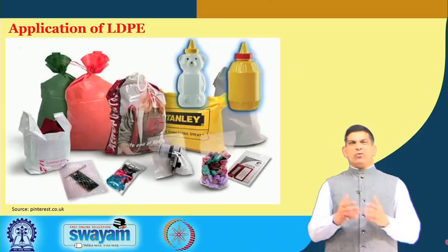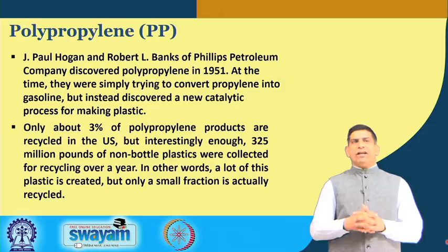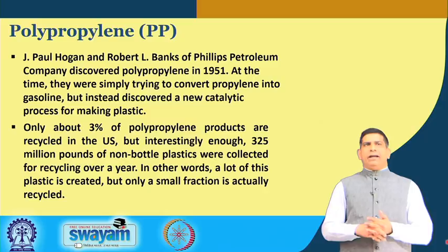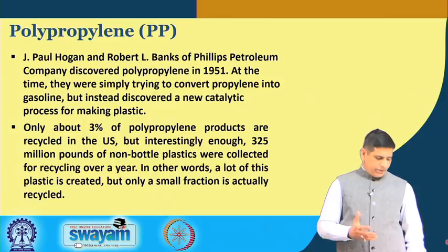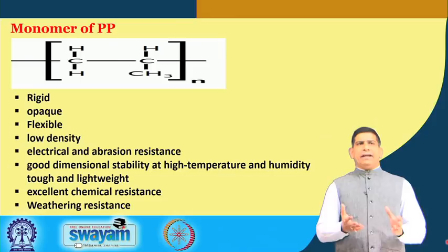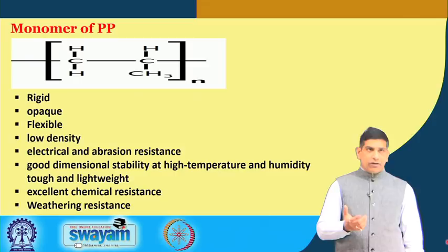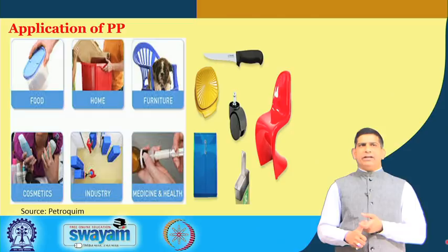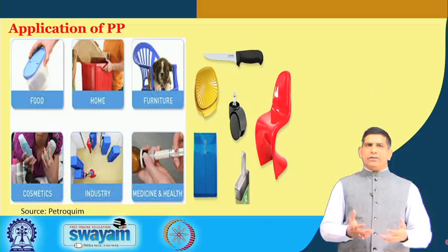Polypropylene: only 3 percent of polypropylene products are recycled in the US — 350 million pounds were collected for recycling in a year, but only a small fraction is actually recycled. Polypropylene is rigid, opaque, flexible, has low density, is electrically resistant, has good dimensional stability, excellent chemical resistance, and weathering resistance. The monomer includes a methyl group (CH₃). It is used for food containers, furniture, industrial applications, cosmetics, and medicine.